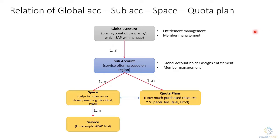As discussed earlier, first of all we have a Global Account at the top level, and inside that Global Account we can create multiple subaccounts. This represents a one-to-many relationship. Once a subaccount is created, we can create a space inside that subaccount that represents a development, quality, or production system.